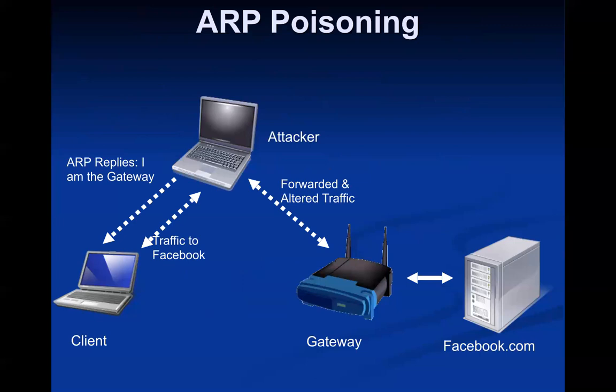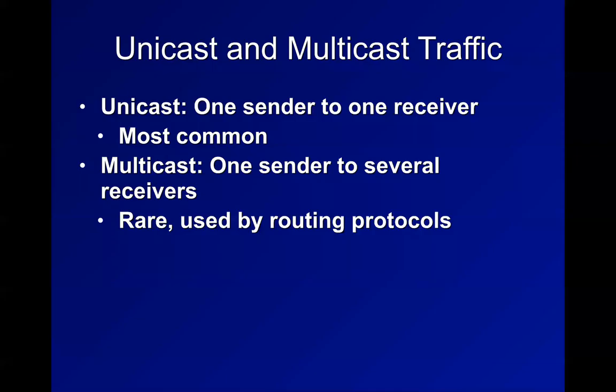So there's ARP poisoning - the attacker lies and claims to be the gateway. Now all the traffic that's supposed to go out the gateway passes through the attacker first. They're in a privileged man-in-the-middle position and can alter traffic coming in and out. Of course, if you're using a VPN it wouldn't matter because they'd only be getting encrypted stuff they couldn't open.